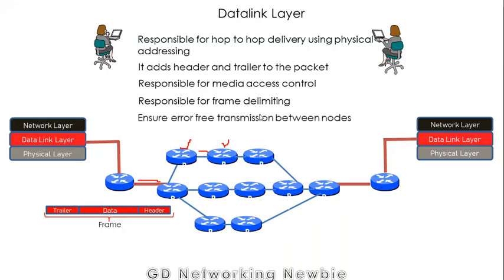The data link layer also provides error-free transmission between nodes. During the encapsulation process, a CRC — Cyclic Redundancy Check — is added in the trailer part of the frame to help detect and resolve error issues.